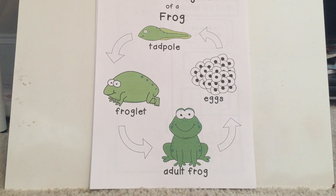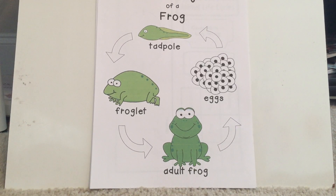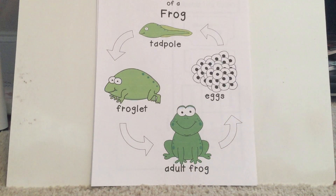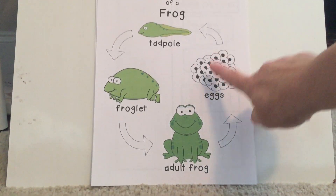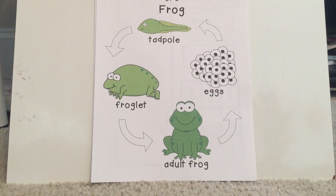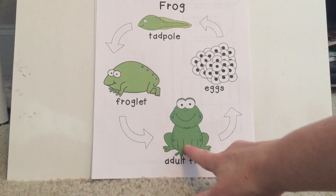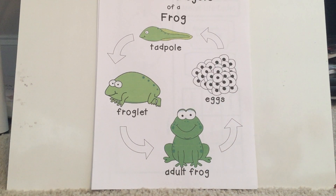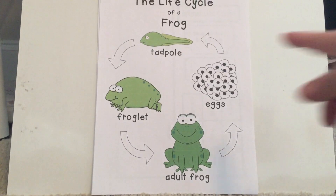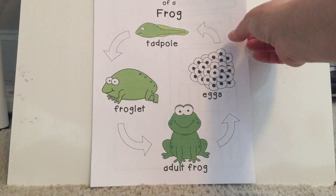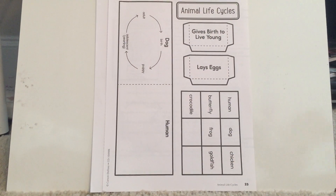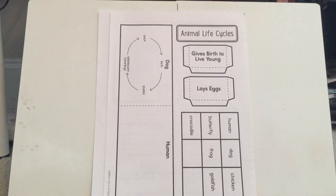They become a froglet, then develop lungs, and Squirtle's going to need to get out of the tank more often so he can breathe with his lungs. Eventually we have the adult frog, who is able to lay eggs again. The adult has fully grown arms and legs, fully developed lungs, and is able to reproduce and make more eggs.